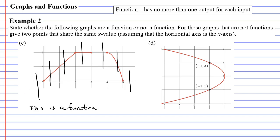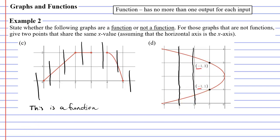Now looking at question D — when I draw my vertical lines you can see we are passing over two points. This is proof that it is not a function. We've labeled two points that share the same x value of negative 1, meaning we have two outputs of 1 and 3 for our input of negative 1. So the points (−1, 3) and (−1, 1) prove that it is not a function.